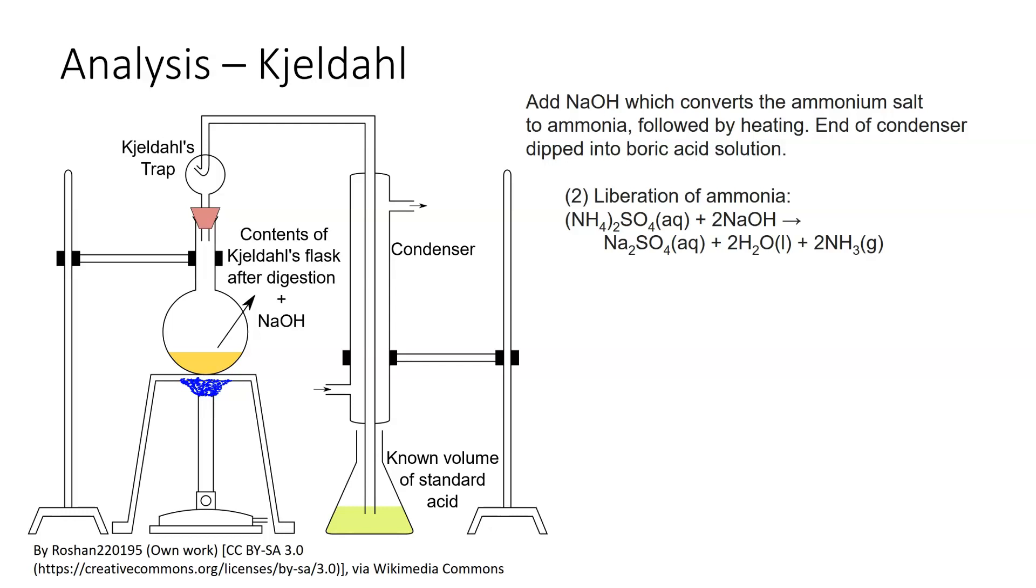The gas will be driven off and travel up the condenser. We then get the capture of the ammonia because the condenser gets dipped into this boric acid solution. The boric acid plus the ammonia will give you ammonium plus a slightly different acid solution. You've changed the pH of the solution down in the bottom here.